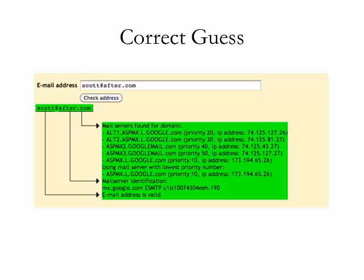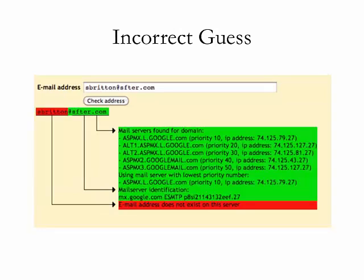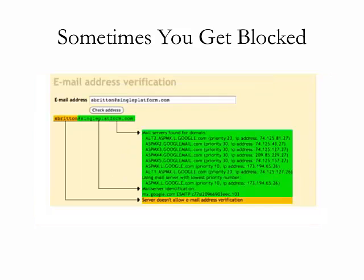To show you what this looks like: you type in a popular syntax, check the address, and if that email address does exist on a server, you get an all-green box that says the email address is valid. If you have an incorrect guess and there is no address on that server, you're going to get a red box that flat out says there is no email address that exists on the server. Sometimes you'll get a yellow box that says there is something on the server which blocks you from determining whether that email actually exists.